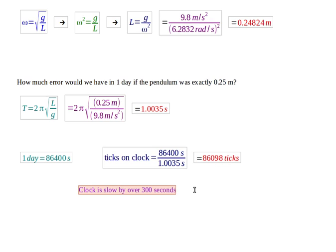So that means my clock is slow by over 300 seconds, or five minutes every day. If you had a clock that was five minutes slow every day, you would be getting a new clock. This is why clocks that work on pendulums have to be manufactured so precisely. I hope this helps explain pendulums a little better.